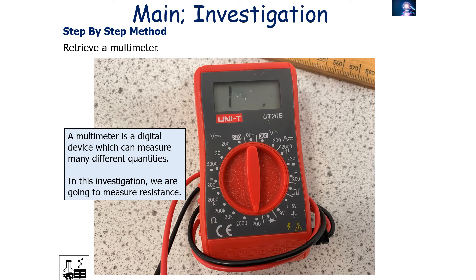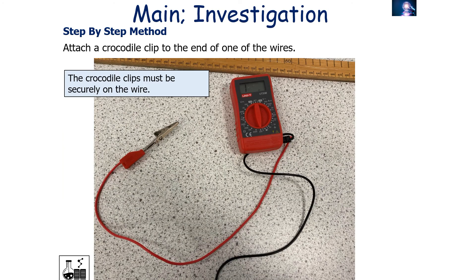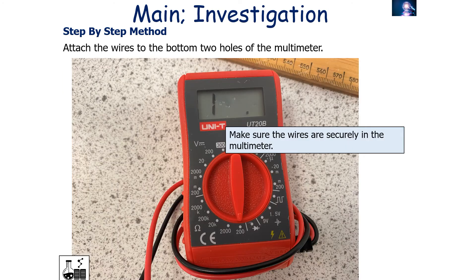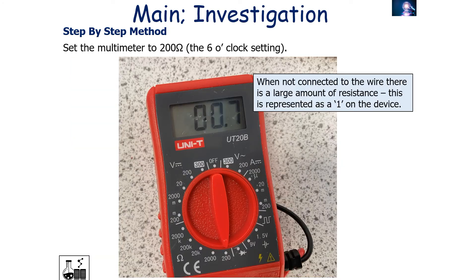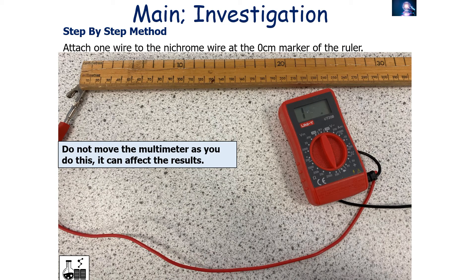Retrieve a multimeter — a digital device that can measure many quantities; in this investigation we will measure resistance. Attach a crocodile clip securely to each wire and plug both wires into the bottom two holes of the multimeter. Set the multimeter to 200 ohms. When not connected to the wire it will display a large reading, represented by a '1'. Attach one wire to the nichrome wire at the zero centimetre marker of the ruler, and do not move the multimeter as this can affect results.